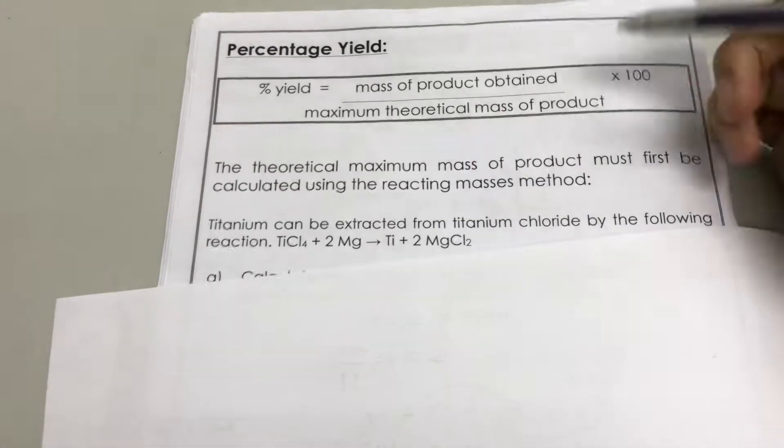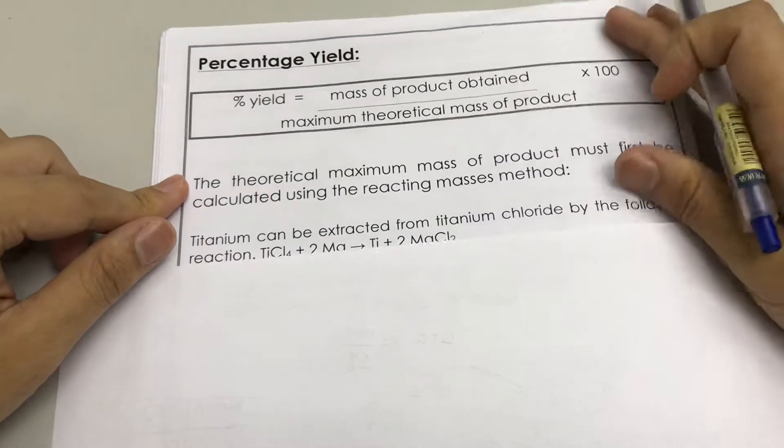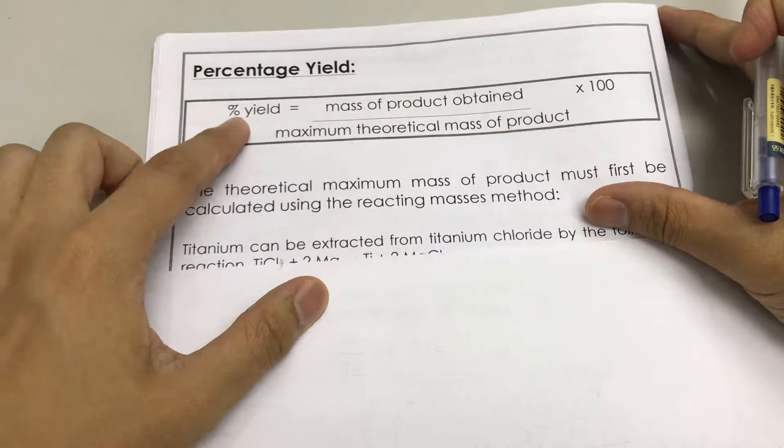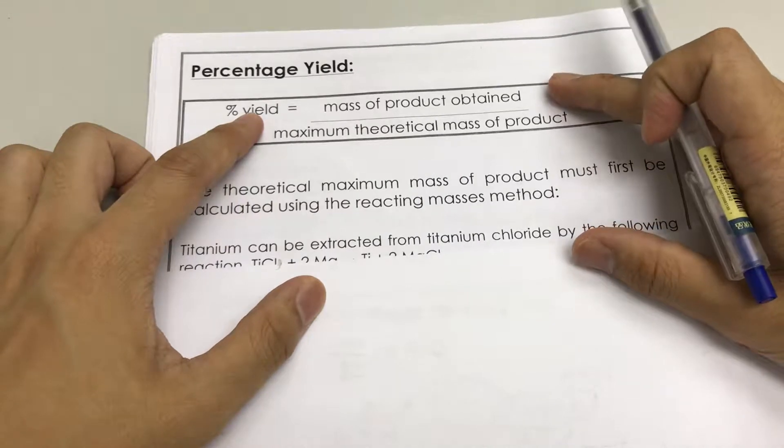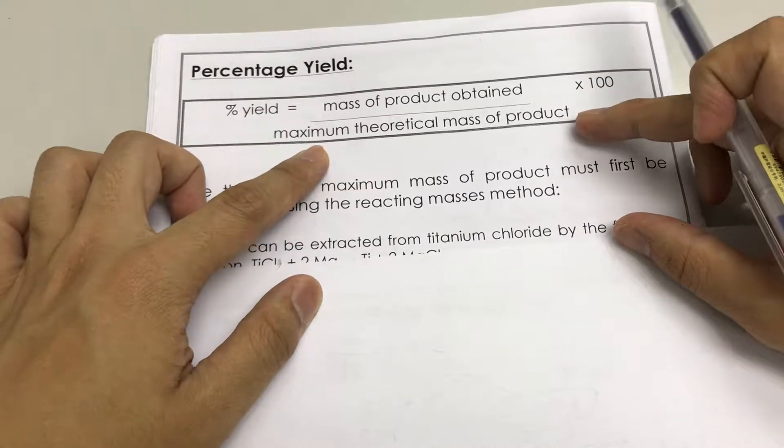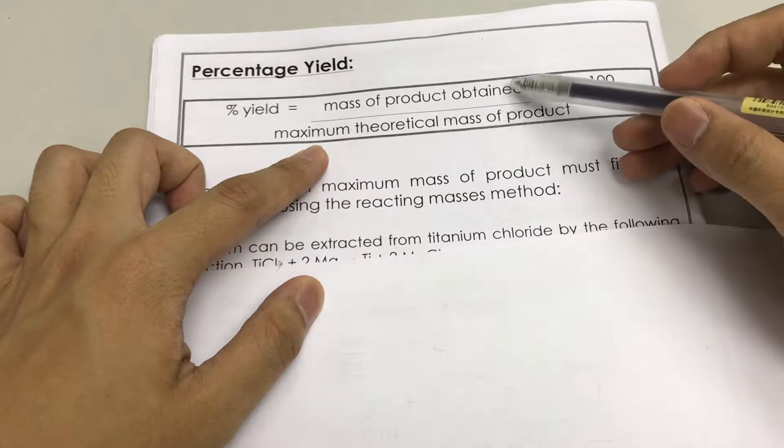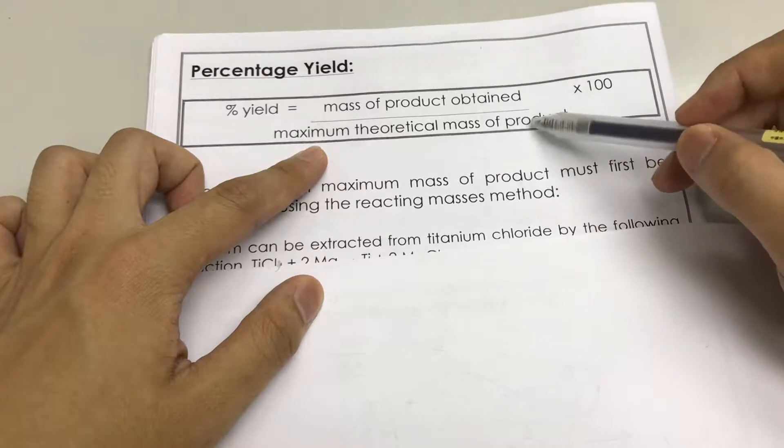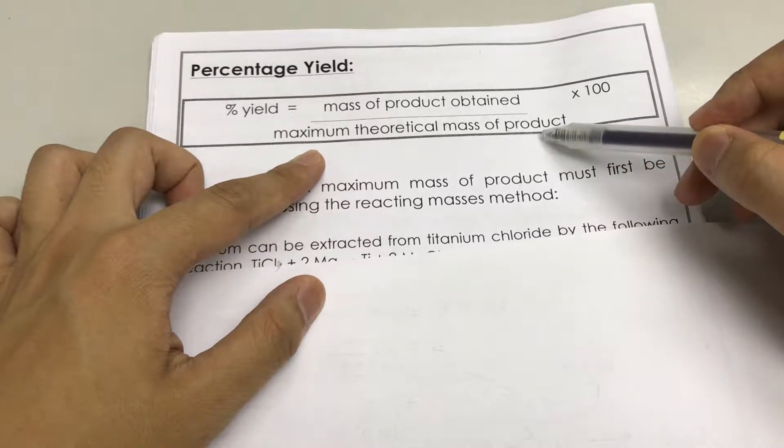Okay, so how do we do a percentage yield equation? First, we have the equation on top. The percentage yield is the mass of product obtained divided by the maximum theoretical mass of product times 100. This is what you get actually when you do the experiment. This is what you calculate, what you get.